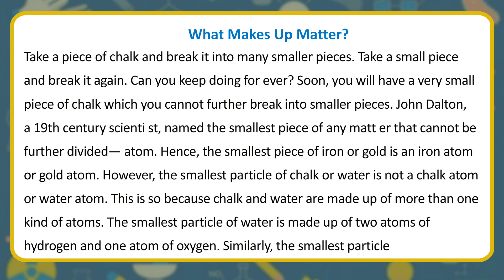What makes up matter? Take a piece of chalk and break it into many smaller pieces. Take a small piece and break it again. Can you keep doing this forever? Soon you will have a very small piece of chalk which you cannot further break into smaller pieces. John Dalton, a 19th century scientist, named the smallest piece of any matter that cannot be further divided — he called it an atom.